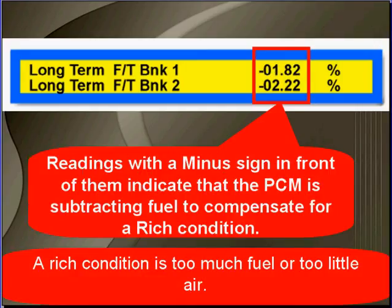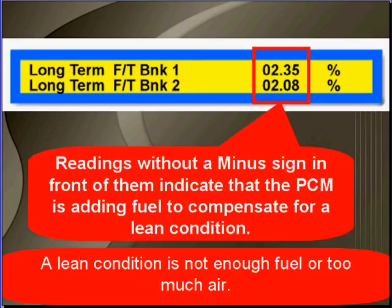Readings with the minus sign in front of them indicate that the PCM is subtracting fuel to compensate for a rich condition. A rich condition is too much fuel or too little air. Readings without the minus sign indicate that the PCM is adding fuel to compensate for a lean condition — not enough fuel or too much air.